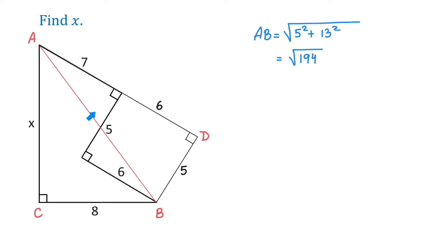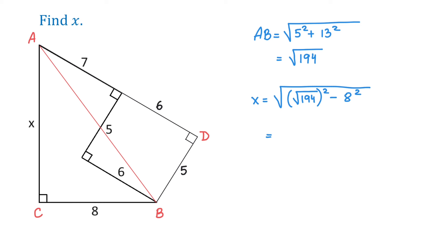Now, once we know AB, we can use the Pythagorean theorem to find X. X equals the square root of the hypotenuse squared, which is the square root of 194 squared, minus 8 squared. This equals the square root of 130, which is approximately 11.4 units. So X is approximately 11.4 units.